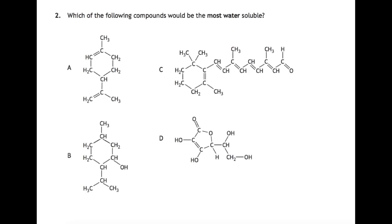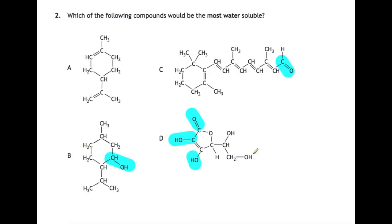Which of the following compounds would be most soluble in water? For a compound to be soluble in water, you need to have polar groups on it. A has no polar groups so it won't be very soluble. B has one polar group with the hydroxyl group. C has one polar bond with the carbon-to-oxygen double bond. D has five polar groups. This means that D will be the most soluble in water.